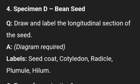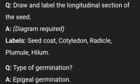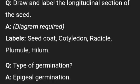Specimen D is bean seed. Draw and label the longitudinal section of the seed. This is another diagram you need to learn — label the seed coat, the cotyledon, the radicle, the plumule, and the hilum. The type of germination for bean seed is epigeal germination. Please note all of this.